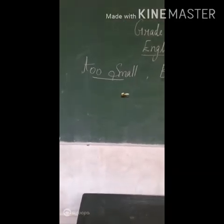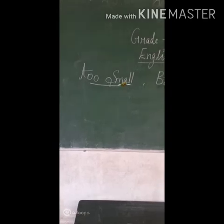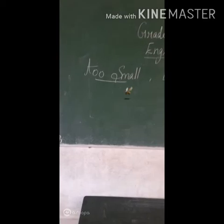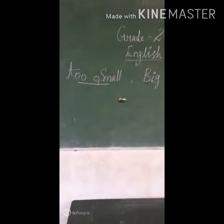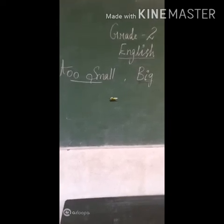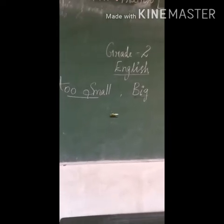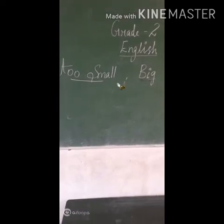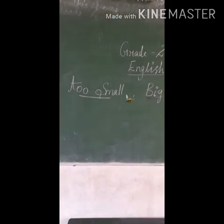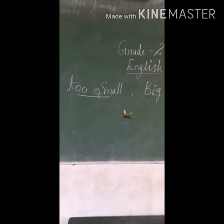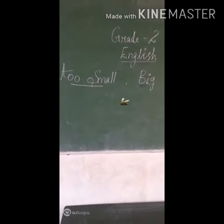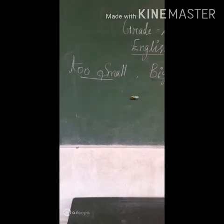Now I am going to introduce the word 'too' — T-O-O. It means very small or very big. Can you see a creature here? A bird — sorry, an insect. A honeybee. Now, for small, we had an example of fish. The honeybee is very much smaller than the fish, so we have to mention it as 'too small.' If it is very small, instead of 'very,' you will say 'too small.'